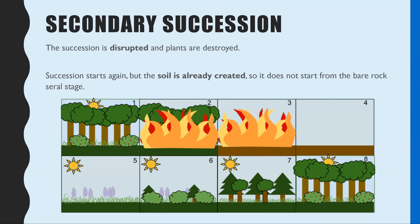A secondary succession is very similar, except it occurs when a succession that was already at its climax community — or an earlier stage — gets disrupted. In this example a fire has burnt down all the trees, but it could also be deforestation, overgrazing by animals, or natural disasters like flooding. Whatever the cause, the plants and animals are destroyed and you're left with soil. Succession then happens again over time, but unlike primary succession you already have soil, so you don't go back to bare rock — that's what makes it secondary succession.